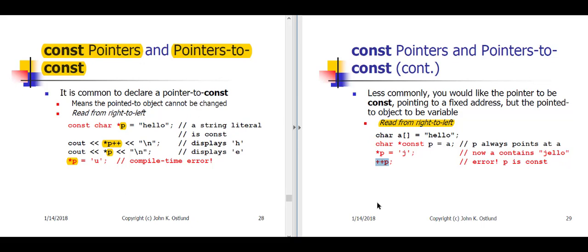All right, so again, comparing slide 28 to slide 29 using our right-then-left reading rule on slide 28, P is a pointer to a char which is const. That means we can't change the char that P is pointing to, but we can change P.